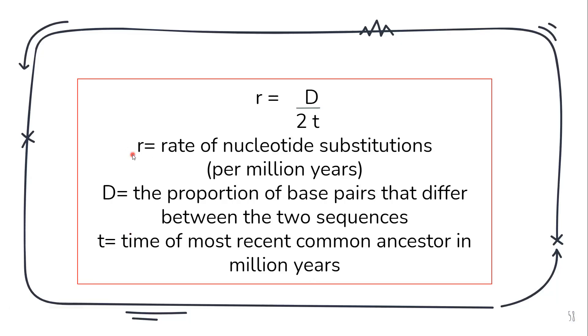What is r? r is the rate of nucleotide substitution which is measured in per million years. So you can find the rate of this substitution if you have the proportion of differences between the two sequences and the time over which this divergence took place.